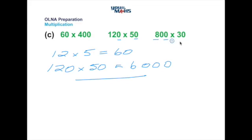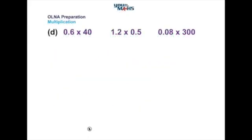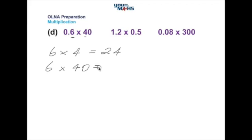For the next one, we've got 800 and 30. Eight multiplied by 3 gives 24, then there are two extra zeros after the 8 and one extra zero after the 3 — that gives three extra zeros after the 24, so the answer is 24,000. In the first question, ignore the zeros and look at 6 multiplied by 4 — six fours are 24. There's a zero at the right-hand side of 40, so we make our solution have an extra zero at the right-hand side: 240.